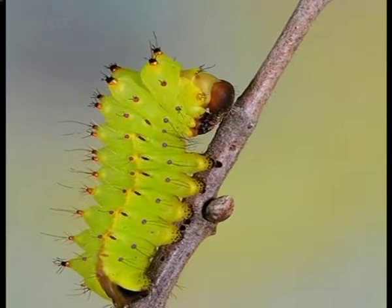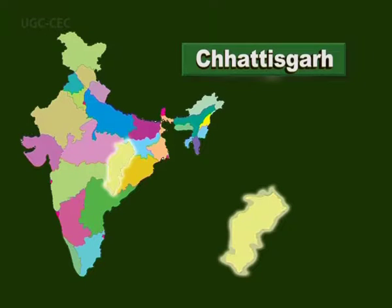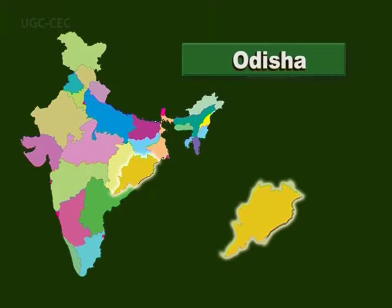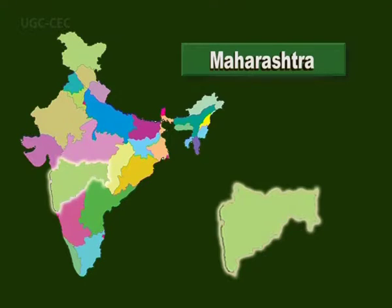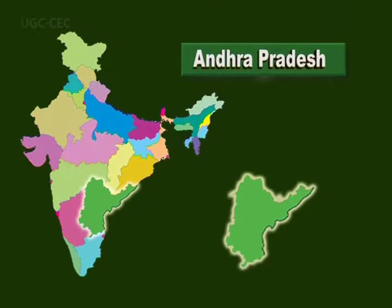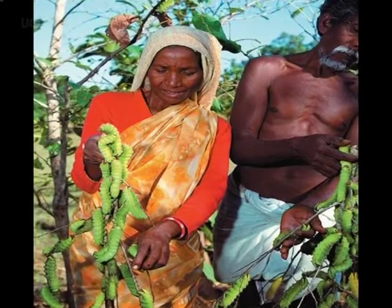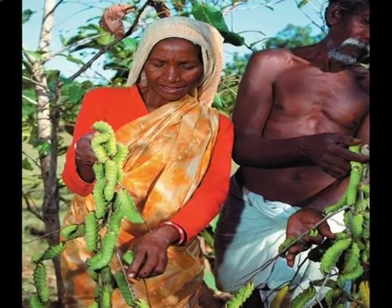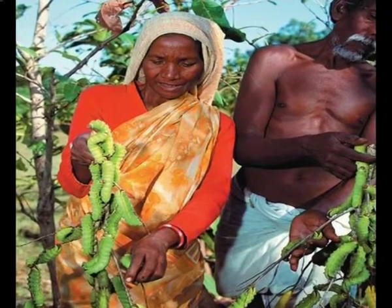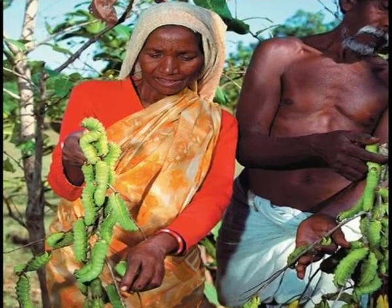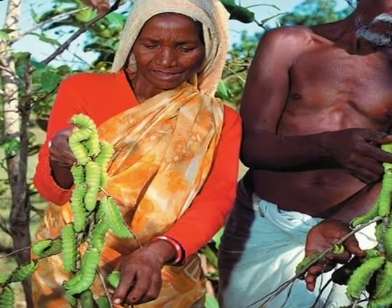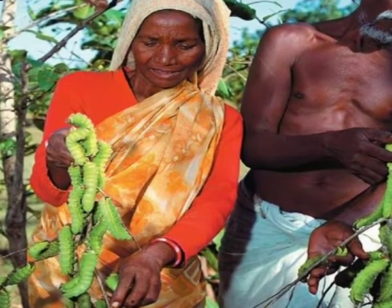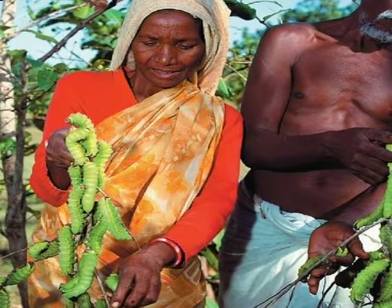Some wild tusser eco-races like Raily (Chhattisgarh), Modal and Jharta (Orissa), Sariha, Nlaria (Jharkhand), Bandara (Maharashtra), and Andhra (Andhra Pradesh) — besides domesticated Daba and Sukhinda — are contributing to livelihoods and elevating the socio-economic status of around 150,000 Indian tribal families in India.